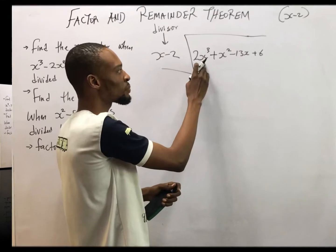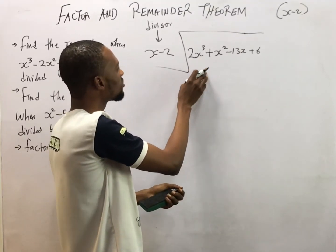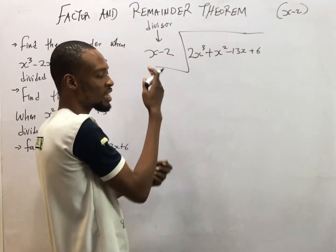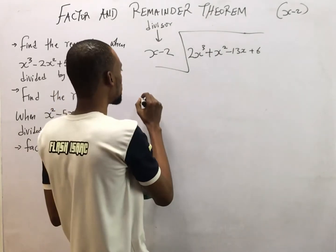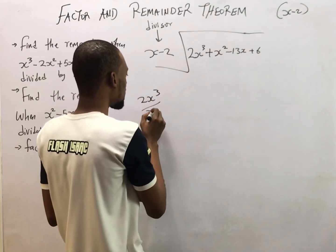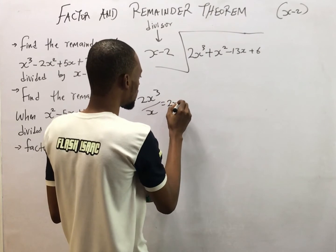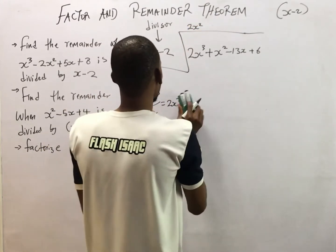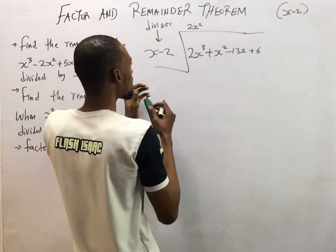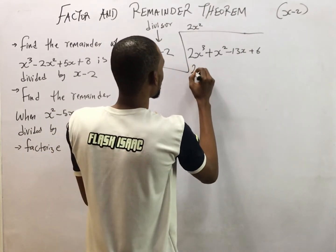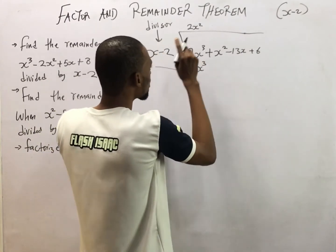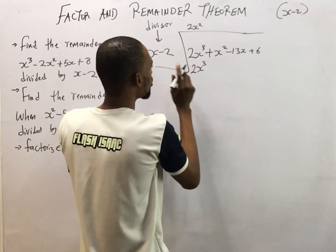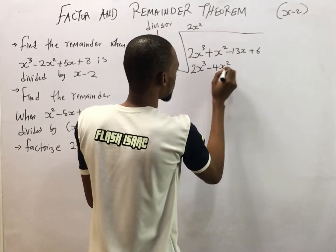So you look for the highest power of variable here. Use it to divide this, which are already treated in division of polynomials. So here you have 2S cubed over S, which is equal to 2S squared. So here is 2S squared. 2S squared times S will give you 2S to the power of 3. 2S squared times minus 2 will give you minus 4S squared.